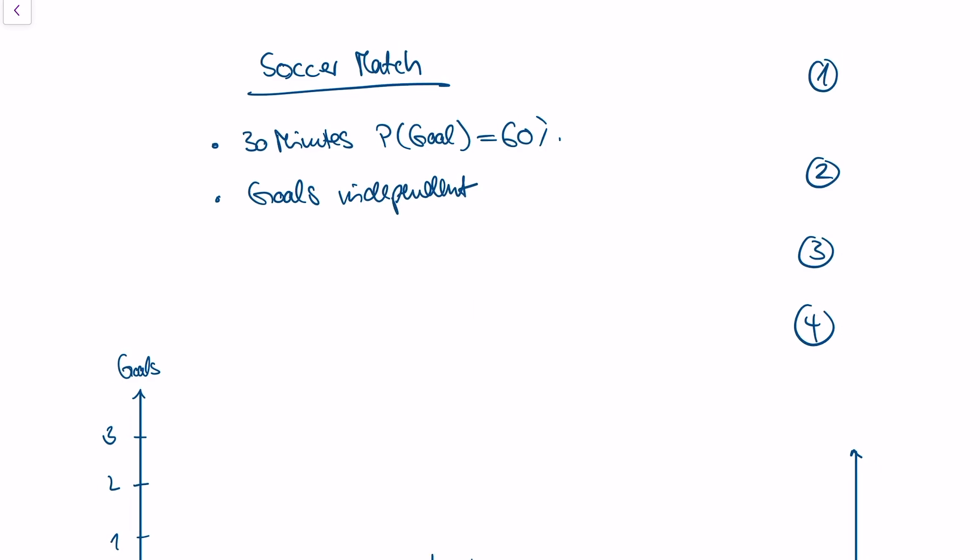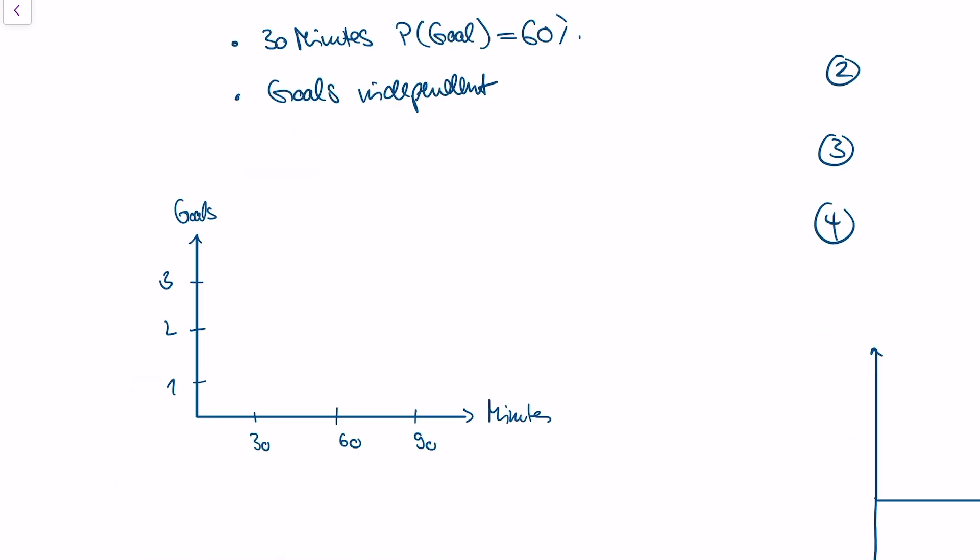So this is a specific stochastic process. What does it look like? We're at the beginning of the game with our model in mind. One thing that could possibly happen is we have zero goals until minute 30, then a goal falls. We're at one goal. At minute 60, a goal falls again—two goals. At minute 90, a goal falls again—three goals. What's the probability that this is actually the representation of our stochastic process? It's 60% times 60% times 60%, so the probability is 21.6%.